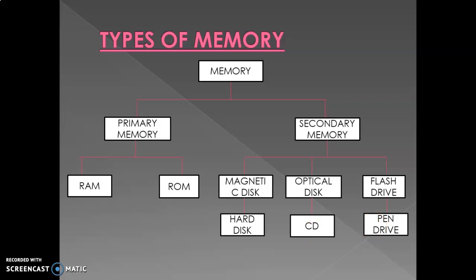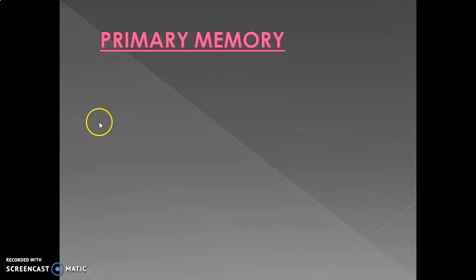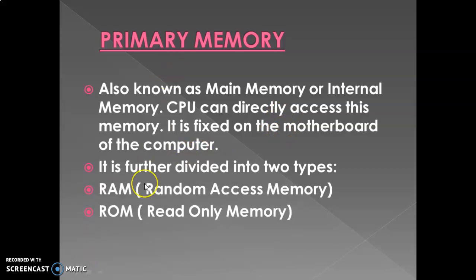If you remember, I taught you about storage devices in class 2 — that in the hard disk, CD, and pen drive, we actually store data permanently. Now, primary memory is also known as the main memory or the internal memory. It is internal memory because it is fixed inside the CPU, and the CPU can directly access it. It is fixed on the motherboard of the computer. Primary memory is divided into two types: RAM and ROM.